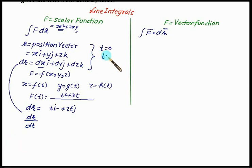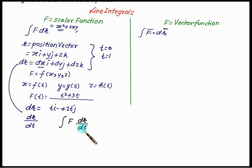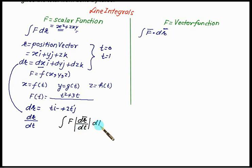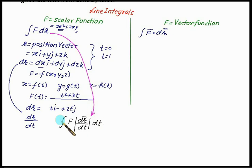We put the limit as t equal to 0 to t equal to 1, but you must confirm these limits — we will discuss limit selection in detail when we do the numericals. The integral of f dr, which is f into (dxi plus dyj plus dzk), becomes f times dr/dt times dt. We take the modulus of dr/dt, multiply by dt, and the dt terms cancel. The integral is then solved from t equal to 0 to t equal to 1.